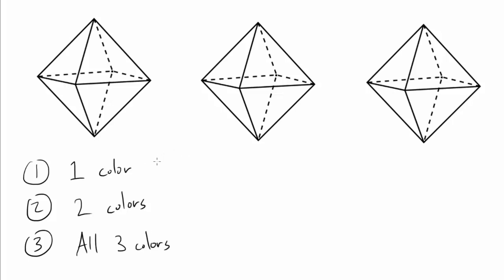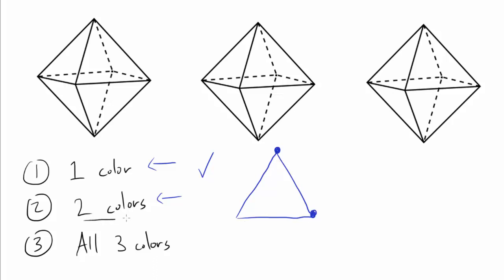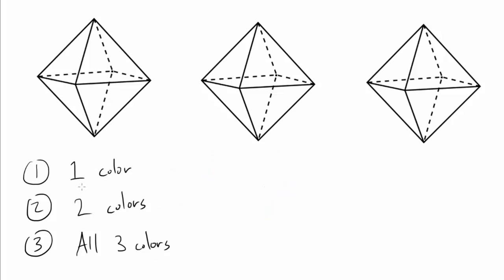It's easy to see that using only one or two colors always satisfies the condition. With one color, every face obviously has at least two vertices of the same color. With two colors, since each triangular face has three vertices but only two colors available, two vertices must share a color by the pigeonhole principle. So the condition is always satisfied for both cases. For one color, we obviously have only three choices: every vertex red, every vertex blue, or every vertex green.